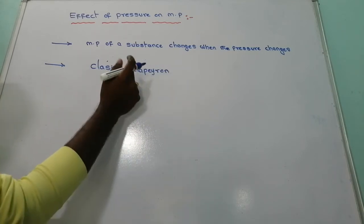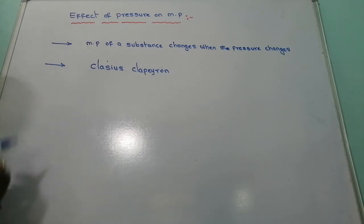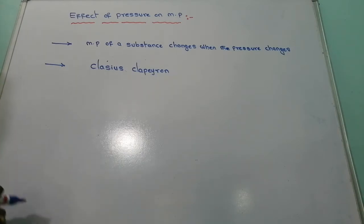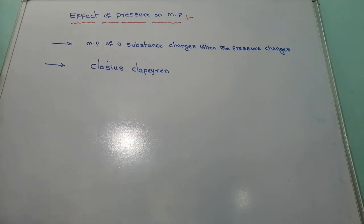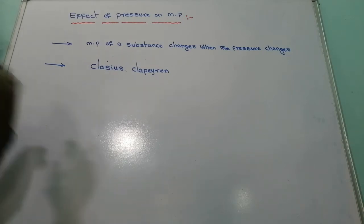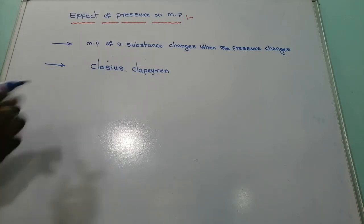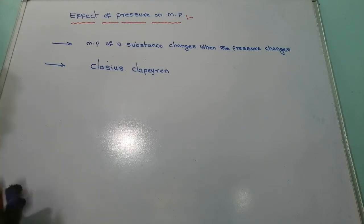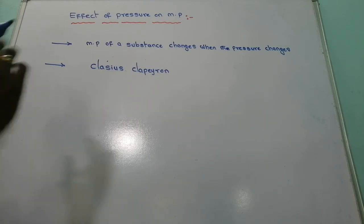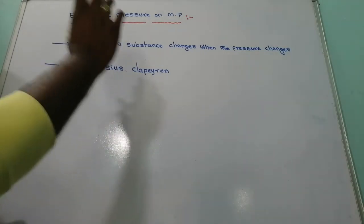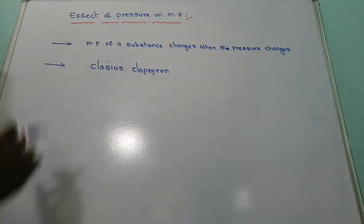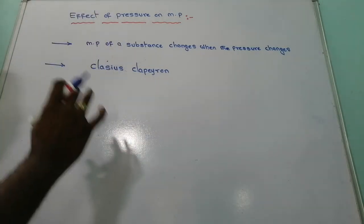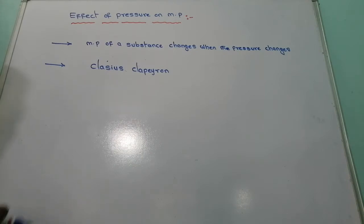According to Clausius-Clapeyron, sometimes when we increase the pressure, the melting point of the substance also gets increased. But in a few cases, when we increase the pressure, the melting point of the substance gets decreased. Let's see for which substances each of these applies.